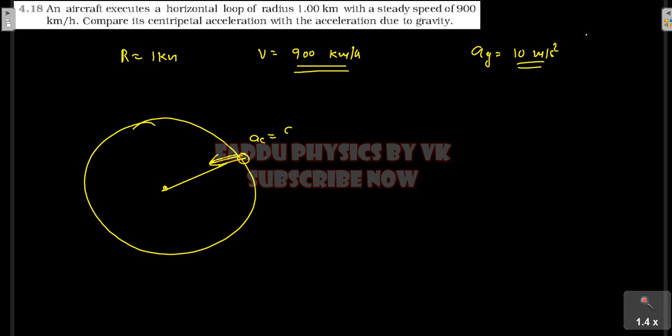The centripetal acceleration will be compared with gravitational force. The centripetal acceleration will be V square by R. We have to put a simple formula and answer it.